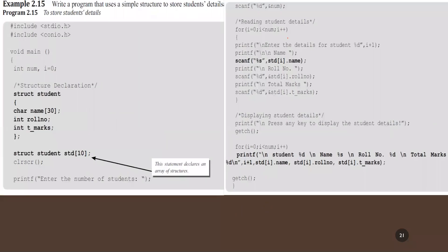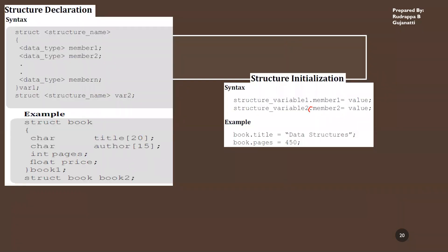To access members of a structure, we use the dot operator. For example, to access book2's pages, we write 'book2.pages' and can assign a value to initialize it. Each member must be initialized separately. Similarly, 'book1.pages = 20' refers to book1's pages, while 'book2.pages' refers to book2's — they are different and will not be the same.